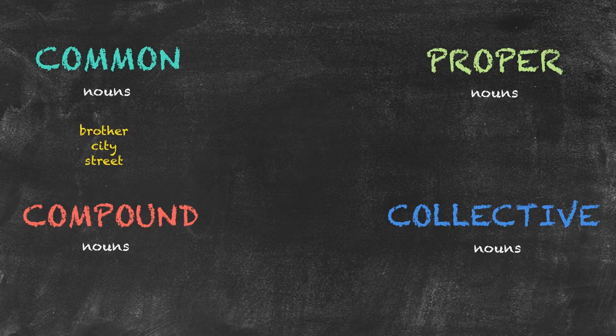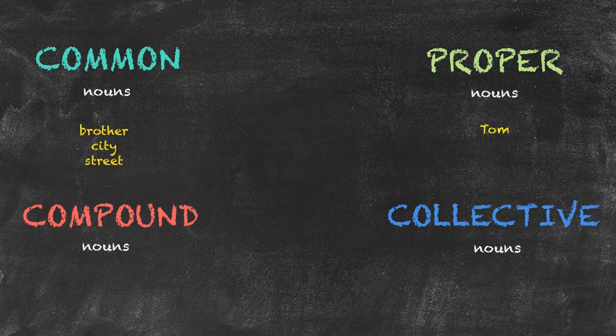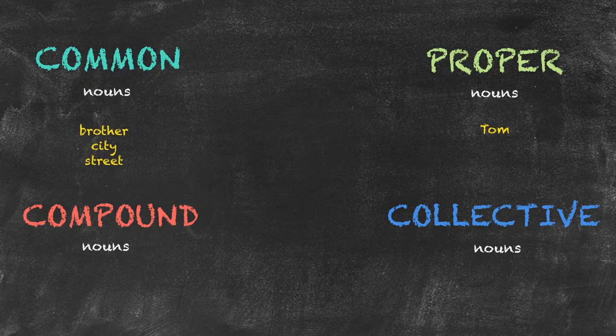We have our proper nouns. A brother has a name like Tom. Tom needs a capital letter. It is a proper name.